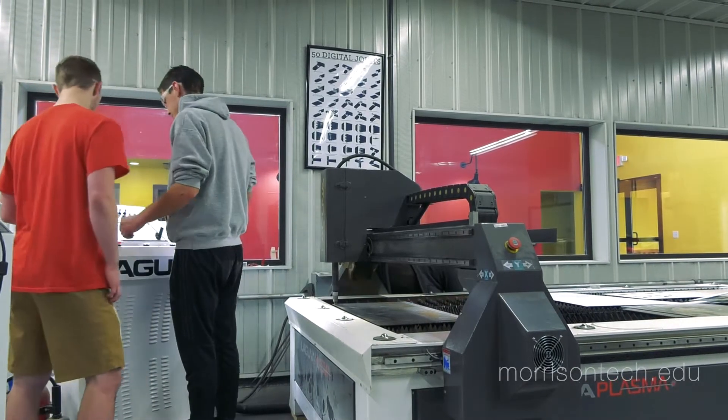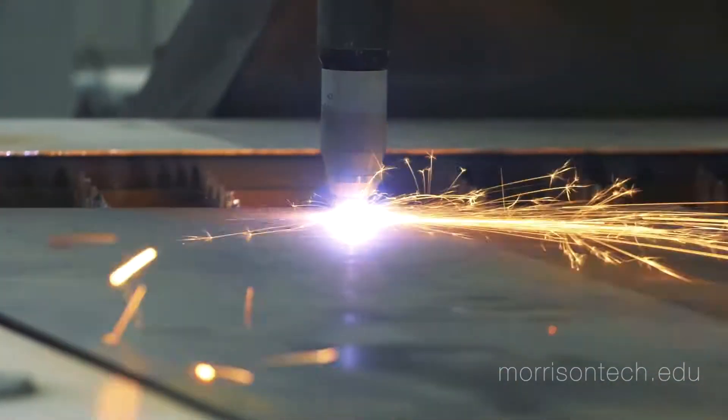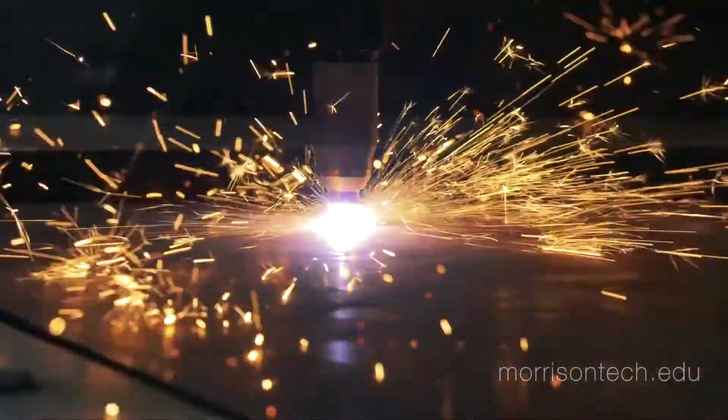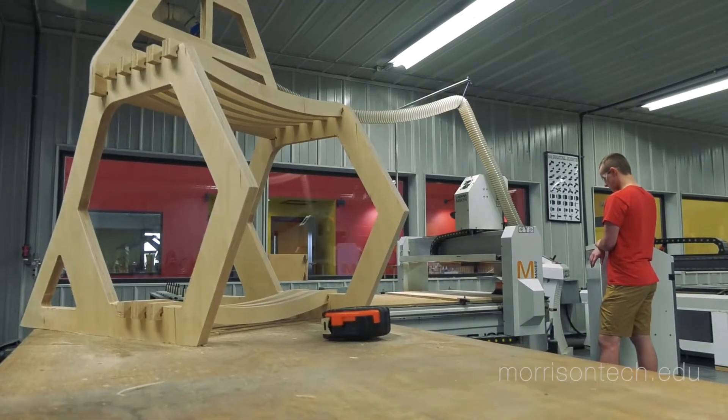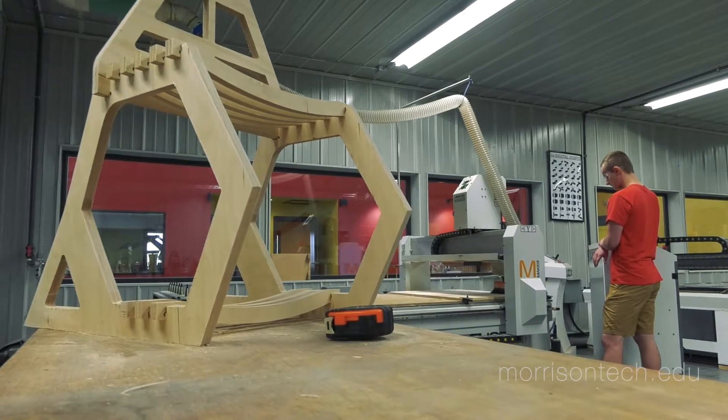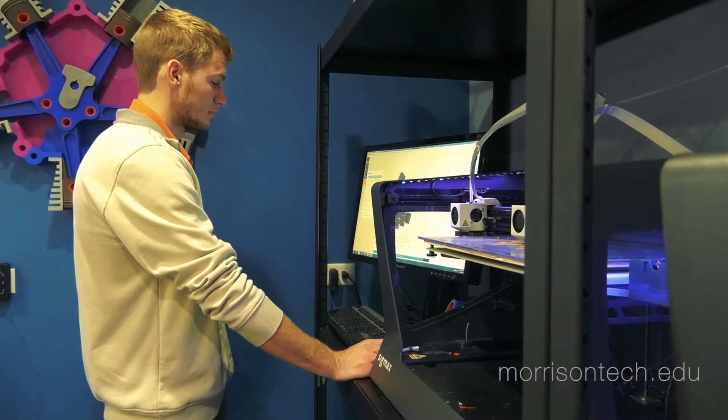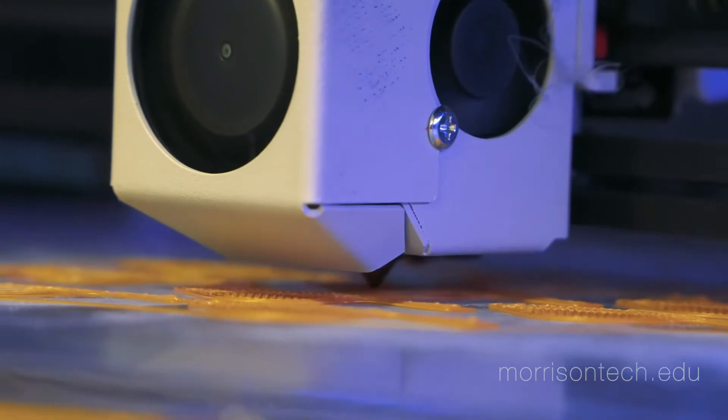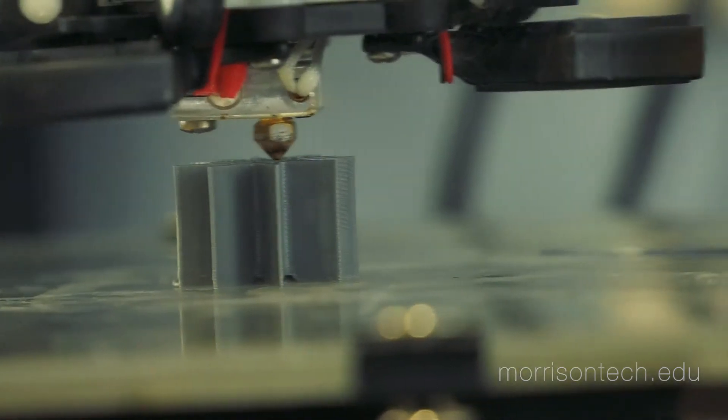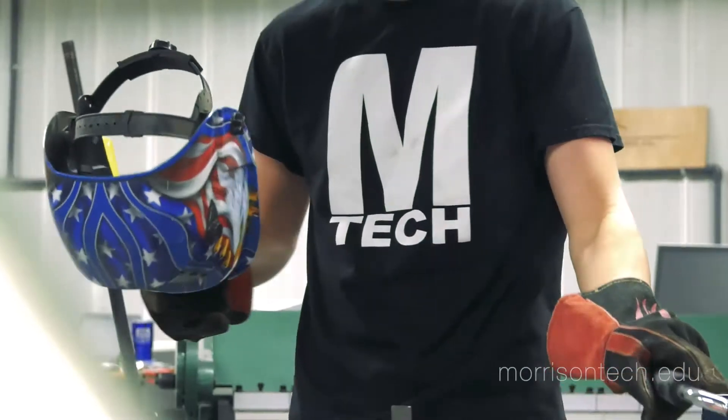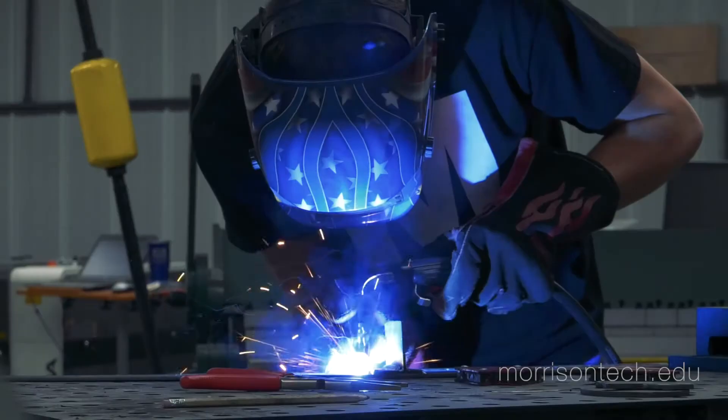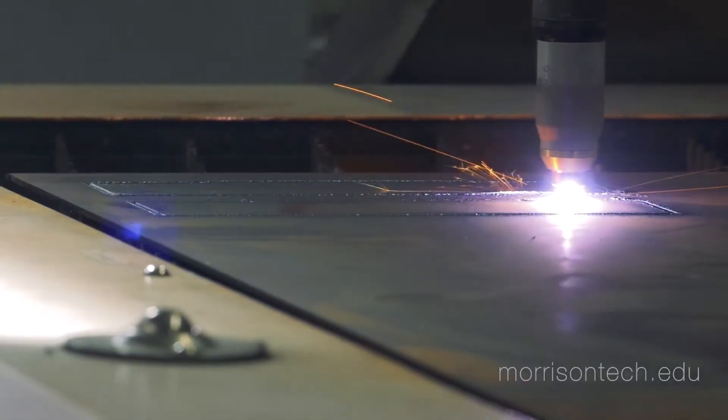We have learned how to laser cut on the machines back there. We used the CNC routers to cut out some chairs earlier. These 3D printers really help with our projects that we're working on now. Really anything you can think of - there's metal capabilities, welding, laser cutting in the metal.